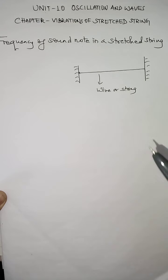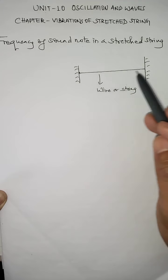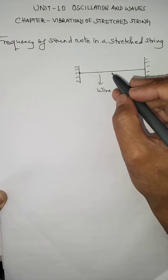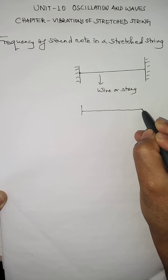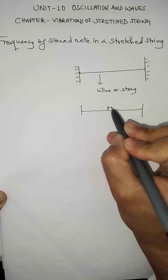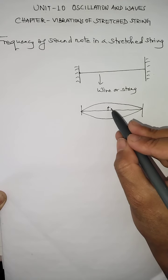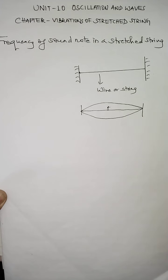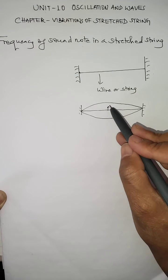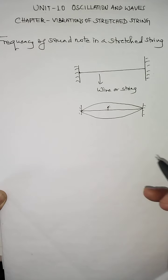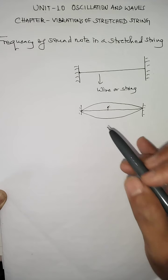To produce sound of different frequencies from a string, it depends on where you pluck the string. Looking at the diagram, we have a wire clamped to rigid supports at both ends. If we pluck the string at the middle, then the string vibrates in a particular way. This vibration of the string produces what is called a transverse progressive wave, which means when the string clamped at both ends is plucked at the middle, transverse progressive waves travel from each end of the wire.